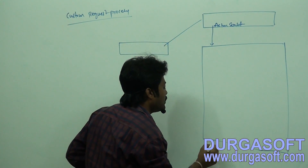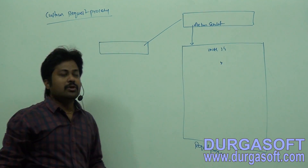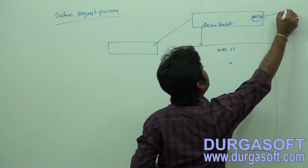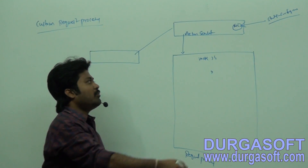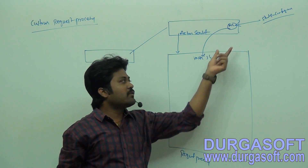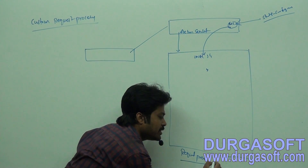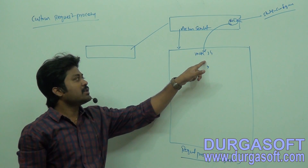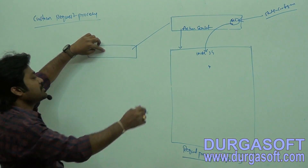Inside RequestToProcessor, there is one init method. Whenever it creates an object for RequestToProcessor, it receives the module config object. The module config object stores your struts-config.xml file information. This struts-config.xml data, in the form of a module config object, is passed to the RequestToProcessor object. The RequestToProcessor object is singleton — only at the first user request it will be created; from the next request onwards the same object is reused.